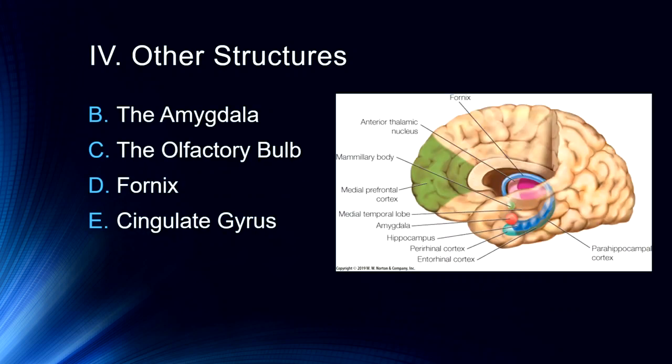Other important structures include the amygdala, which is very important in emotional processing, and very close to that is the olfactory bulb — tying in with emotion memory and scent memory. We'll also talk about the fornix and cingulate gyrus as important parts. So that's a quick introduction to some of the anatomy we'll be talking about. We'll develop this into a pretty formal model of memory in later lectures. In the next lecture, we're going to talk about amnesia and dementia.